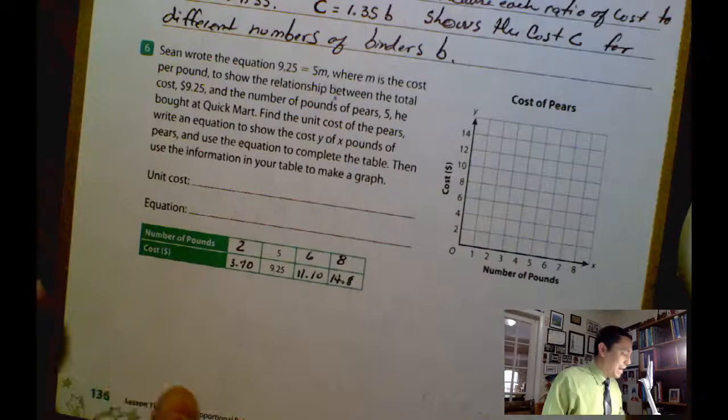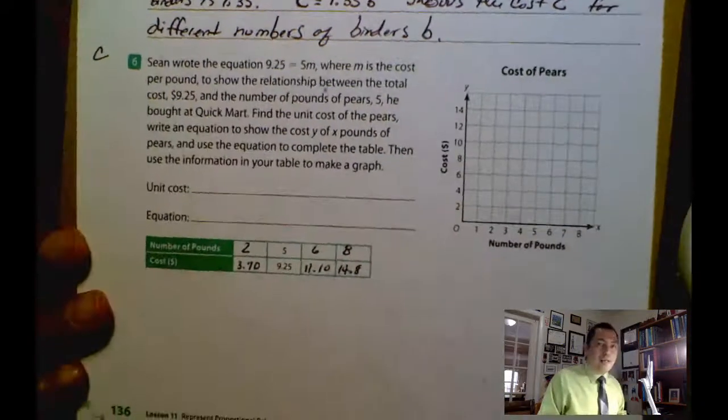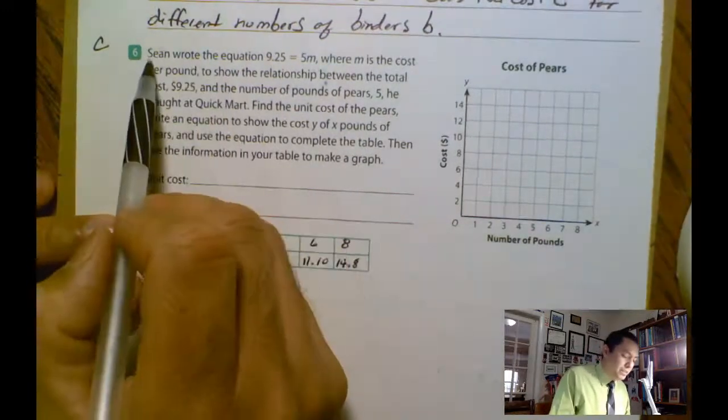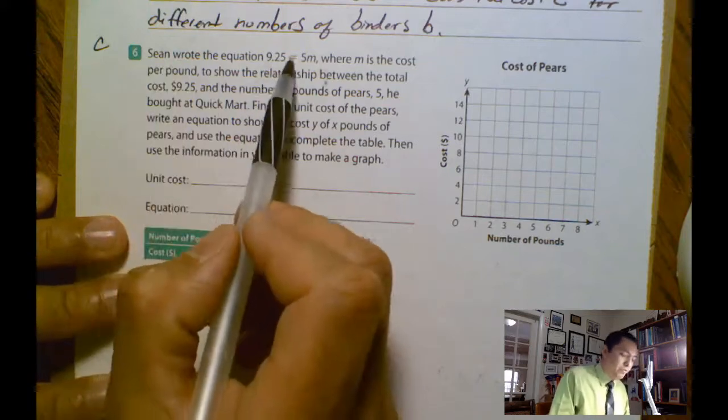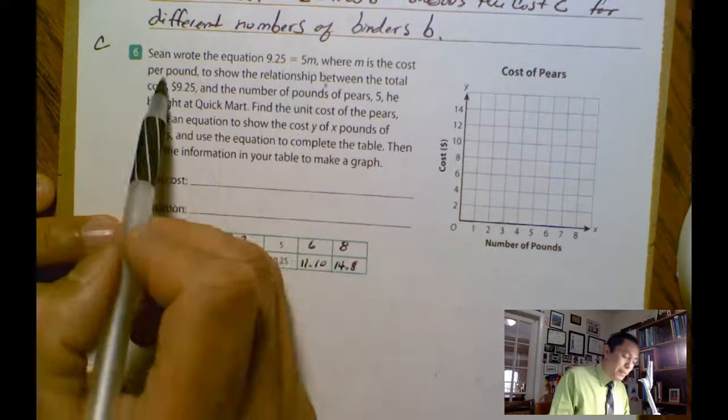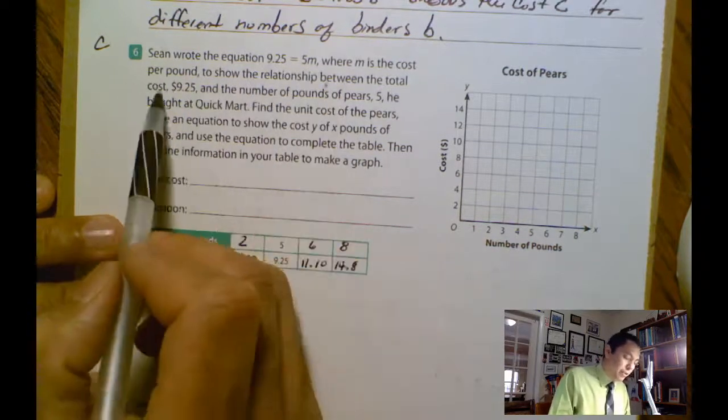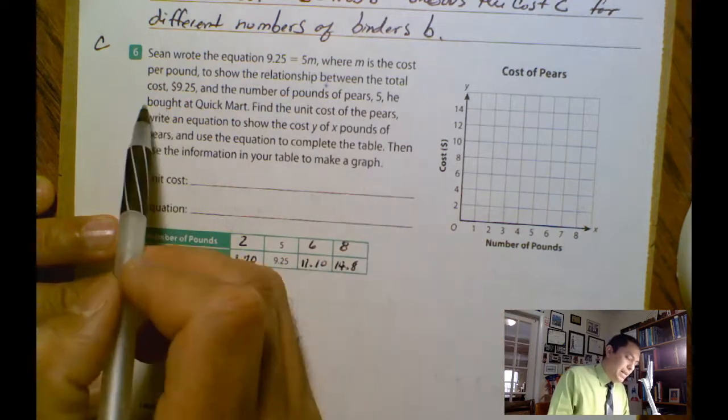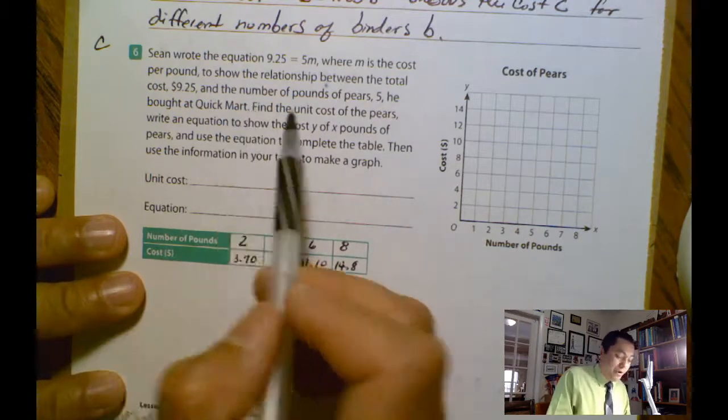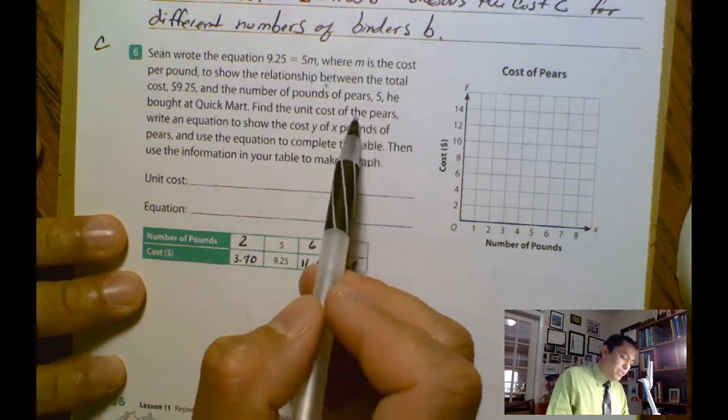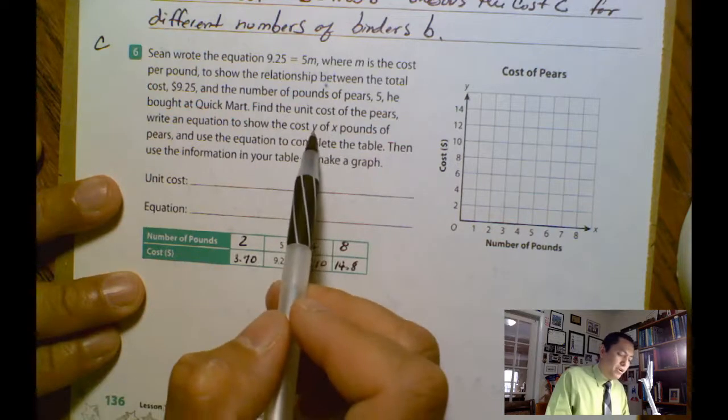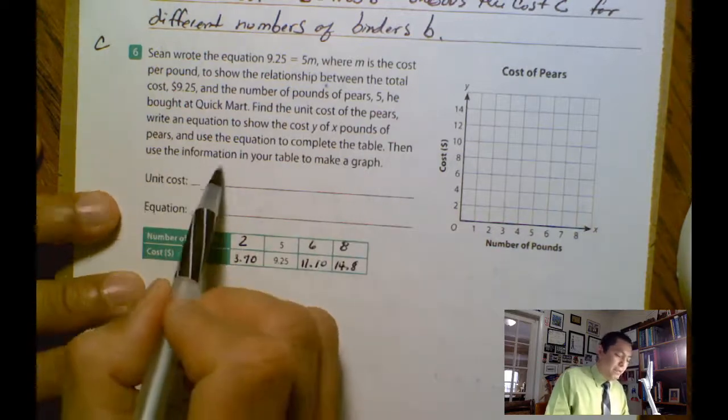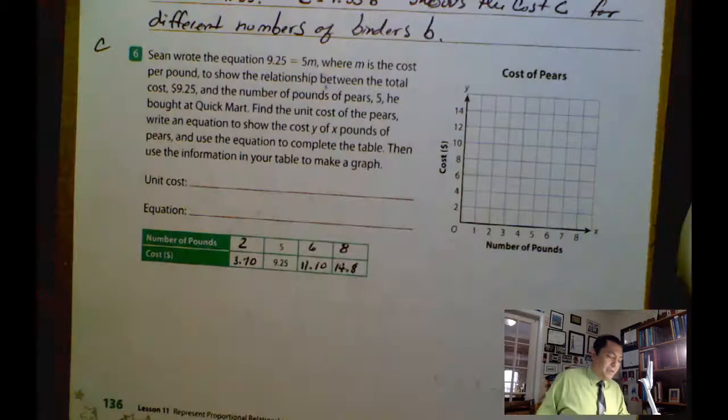And now let's go to the last one. It's a little bit more complex question. In this case, I have already the solutions here. I was thinking on it. Sean wrote the equation 9.25 equals 5M, where M is the cost per pound to show the relationship between the total cost, 9.25, and the number of pounds of pears, 5. He bought at Quick Mart. Find the unit cost of the pears, write an equation to show the cost Y of X pounds of pears, and use the equation to complete the table. Then use the information in your table to make a graph.